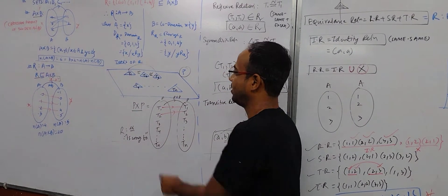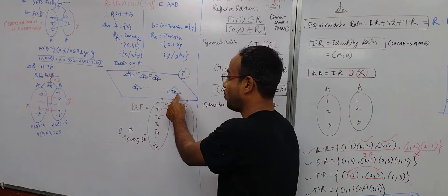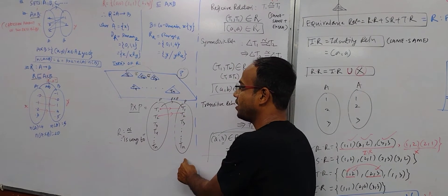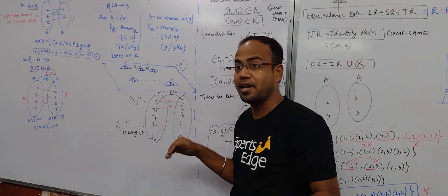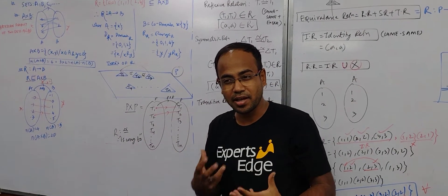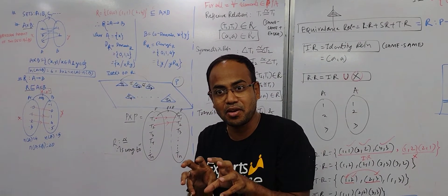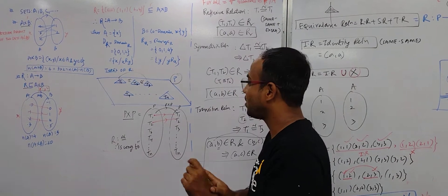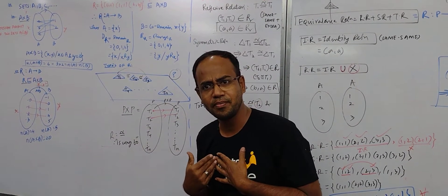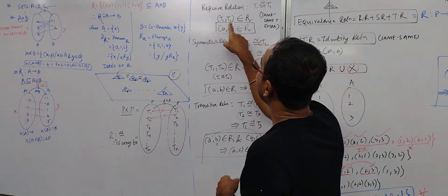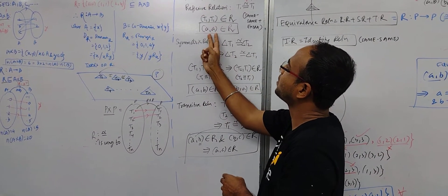P means all T's, all the triangles. And if P cross P, how many elements are there? N into N, N square. Now what is the relationship? It is inside it. So how is the relationship? T1 is congruent to T1? It will be congruent to yourself. So first, T1 is congruent to T1. It means it is congruent to yourself.